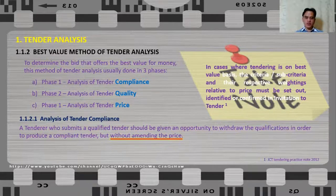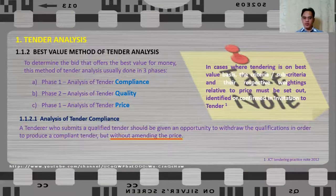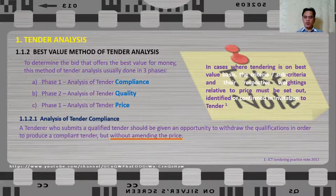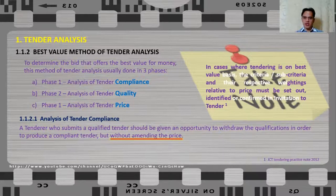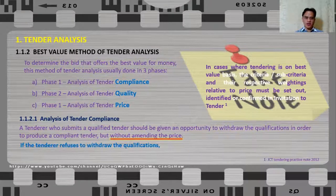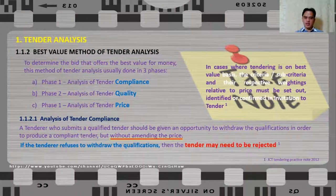The danger of awarding the project to a non-compliant offer is that the cost of compliance becomes variable and may drastically increase the project cost in the end. You have to give the tenderer who submits a non-compliant tender a chance to withdraw the qualification. If the tenderer refuses to withdraw the qualifications, then the tender may need to be rejected.